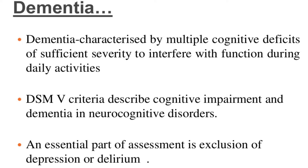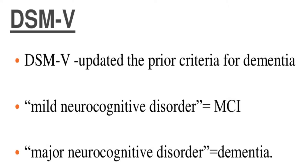Dementia is usually characterized by multiple cognitive deficits of sufficient severity to interfere with function during daily activities. The DSM-5 criteria describe cognitive impairment and dementia under neurocognitive disorders. The essential part of the assessment of dementia is exclusion of depression or delirium according to the new DSM-5 criteria, which updated the prior criteria for dementia. We also have mild neurocognitive disorder and major neurocognitive disorder, the latter being dementia.